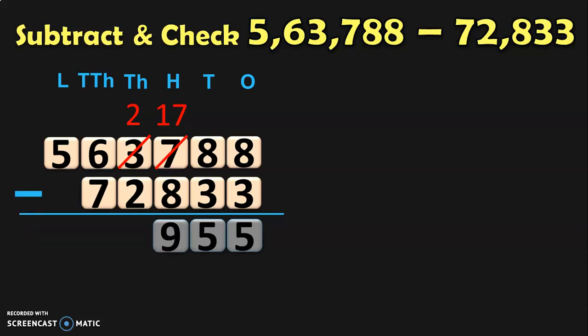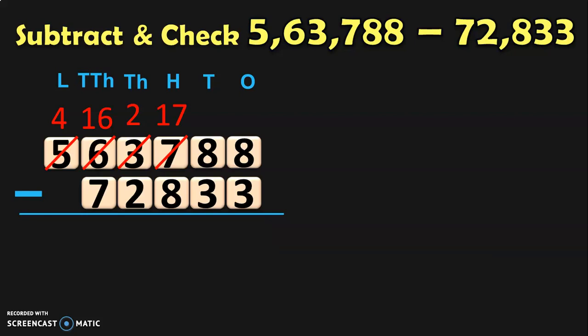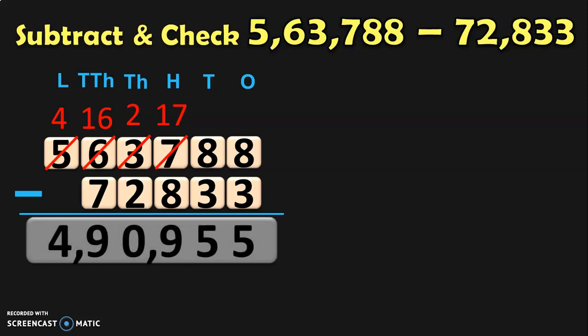Next, move to the 1000s place where you have 2 minus 2, which will give you 0. Coming to the 10 thousands place, it is 6 minus 7. We know that 7 is greater than 6, so we have to borrow from the lakhs place. In the lakhs place, you have 5 lakhs which, when regrouped, becomes 4 lakhs plus 1 lakh or 10 ten-thousands. When you give that 10 ten-thousands to the 10 thousands place, you will have 16 ten-thousands. 16 minus 7 gives you 9 in the 10 thousands place, and in the lakhs place, you write down 4 lakhs. So the answer is 4 lakhs 90,955.